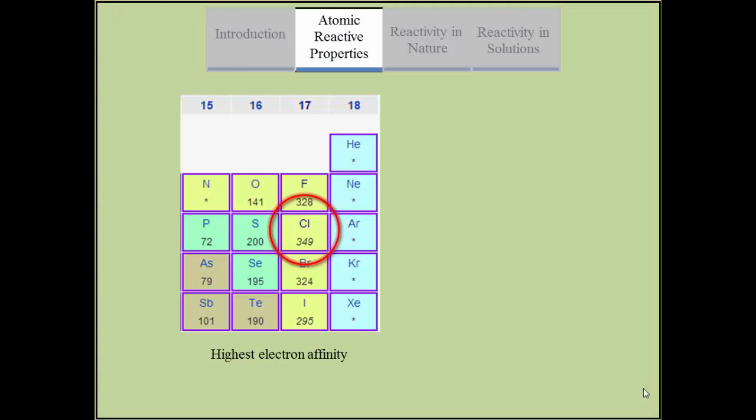Because chlorine is a halogen, it is highly reactive and has the highest electron affinity and the fourth highest electronegativity.